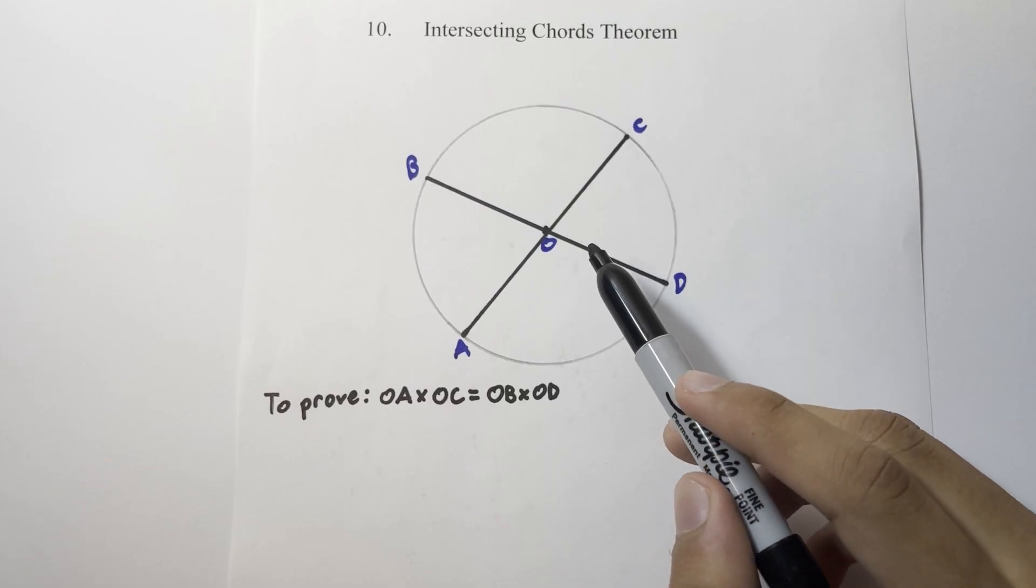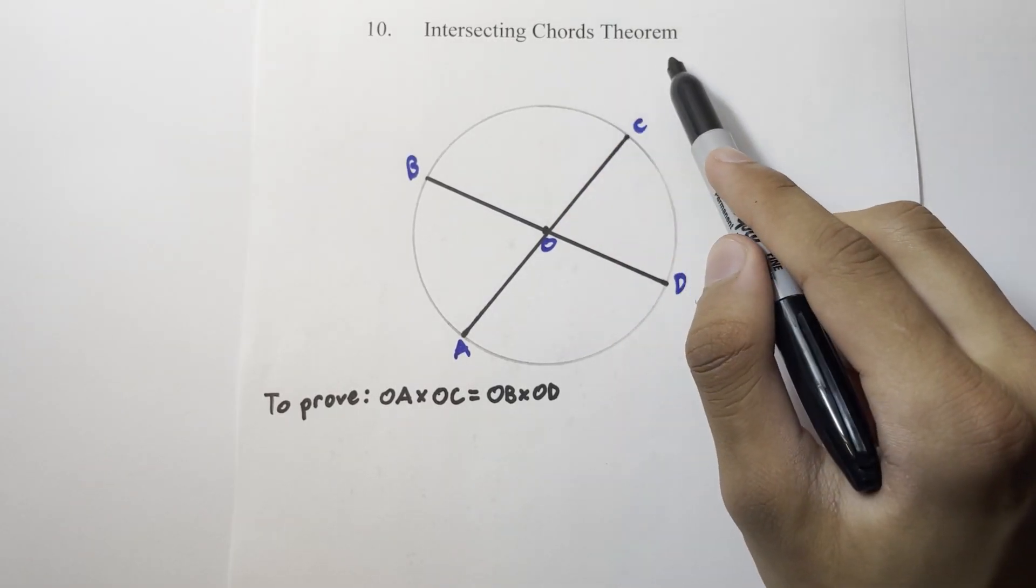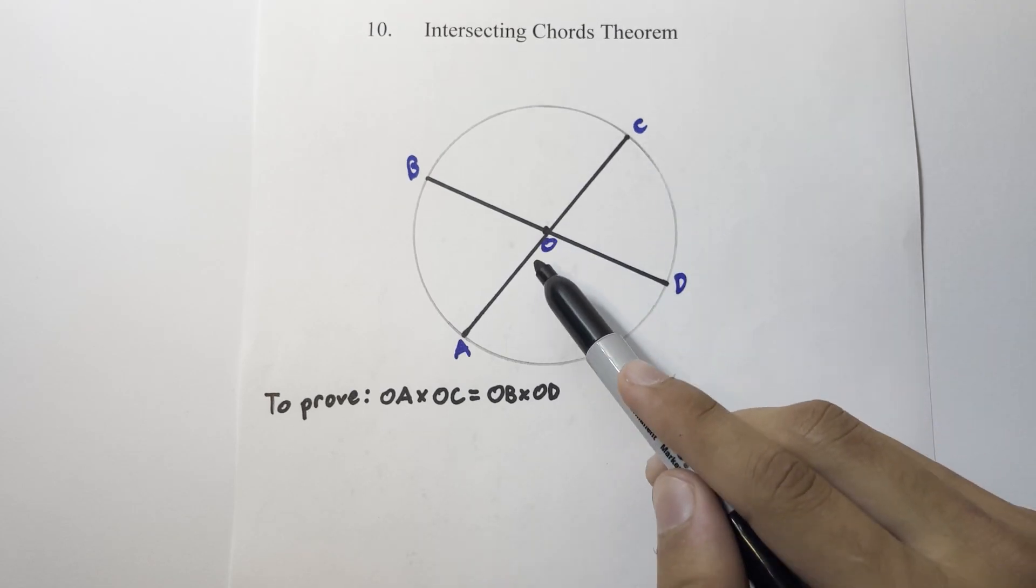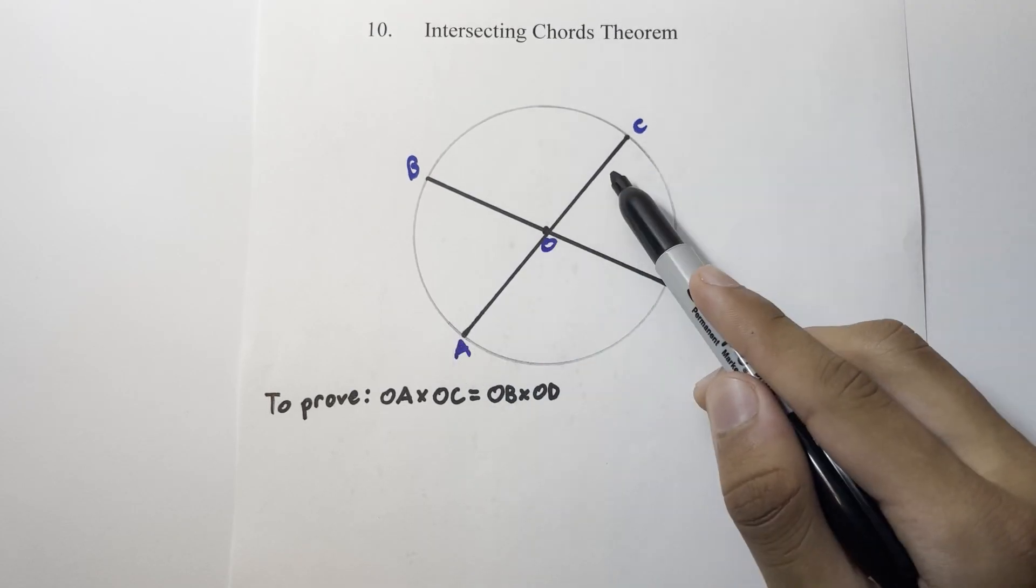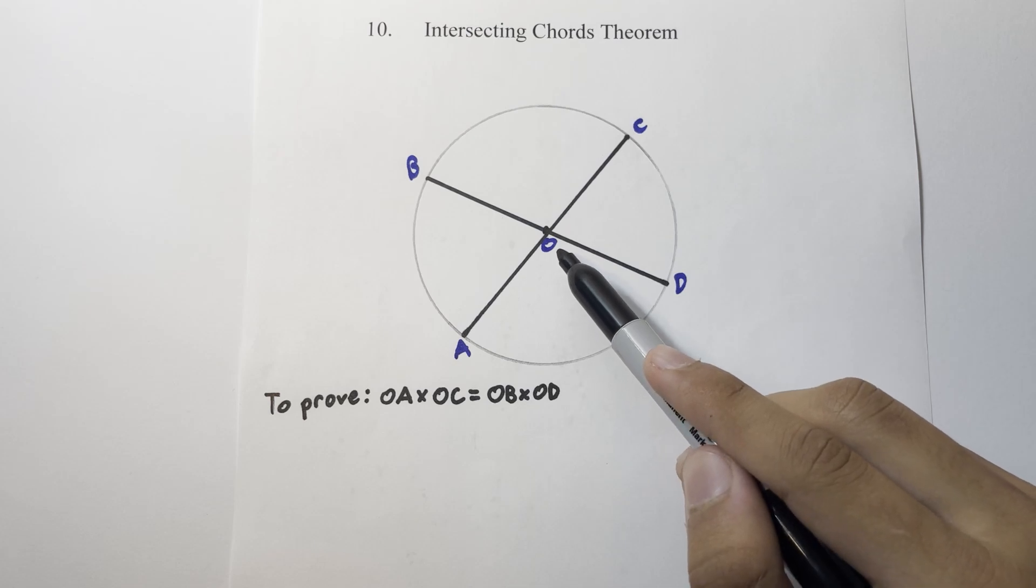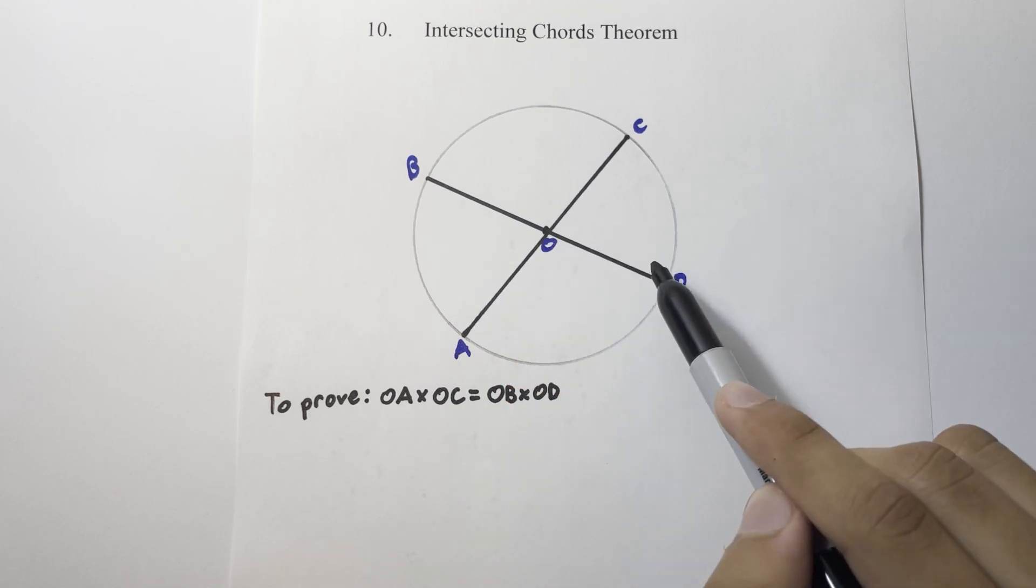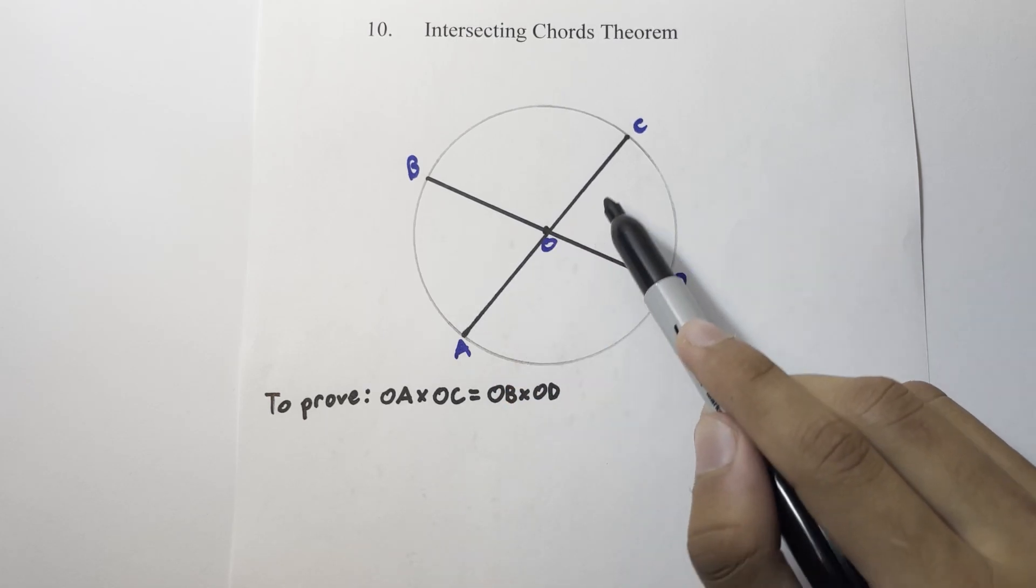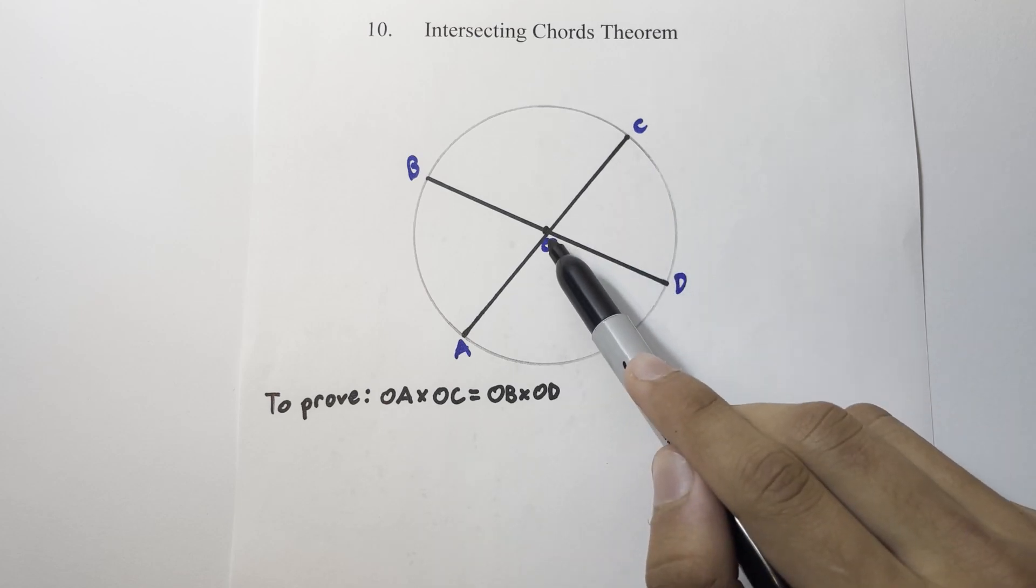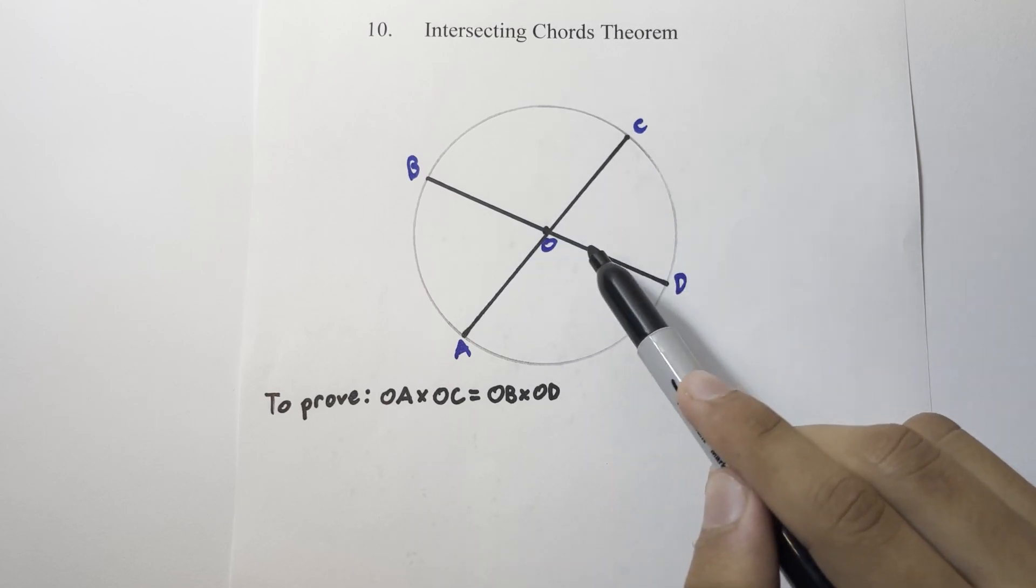The final circle theorem that we're going to cover is called the intersecting chords theorem, which states that in a diagram such as this, when you multiply the lines OA and OC, you get the same result as if you multiplied OB and OD. The chords in this diagram are actually diameters since they pass through the center of the circle, but this works for all chords as long as they intersect.